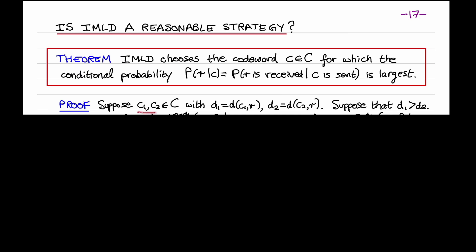Suppose that C1 and C2 are two codewords. Let D1 be the distance between C1 and R, and D2 the distance between C2 and R. Without loss of generality, suppose that D1 is greater than D2. What we would like to prove is that P(R|C1) is less than P(R|C2). In other words, the codeword C2 that is closer to R than C1 yields a larger conditional probability than the one for C1. Establishing this inequality proves the theorem.